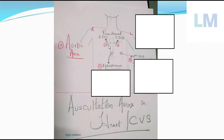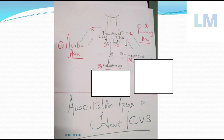Similarly, on the left side - left parasternal second intercostal space - that is the second area of auscultation, called the pulmonary area. In this area you will hear the closure of the pulmonary valves much more clearly. For now, remember: right parasternal second intercostal space is the aortic area, left parasternal second intercostal space is the pulmonary area.